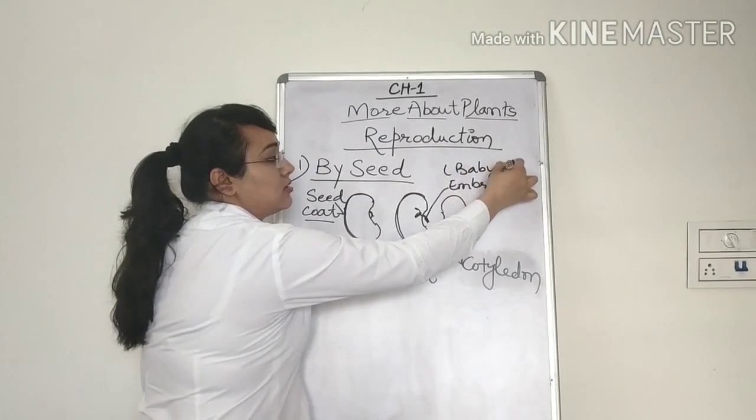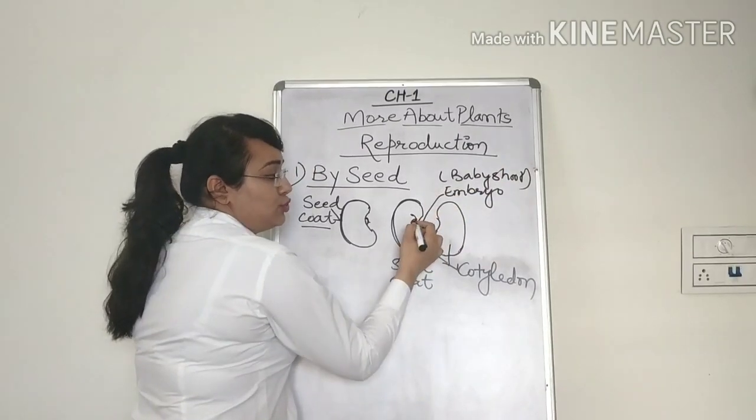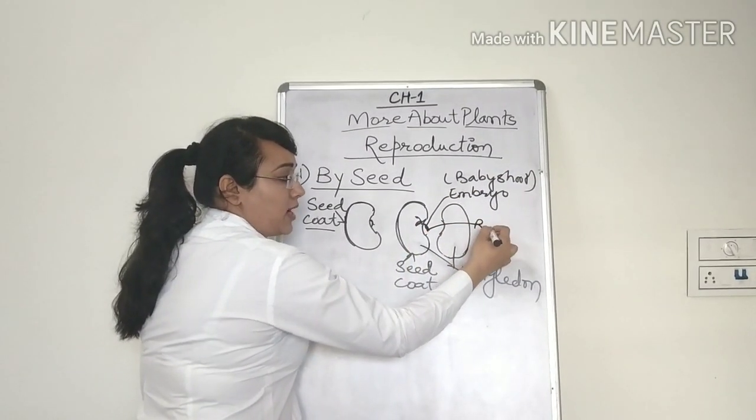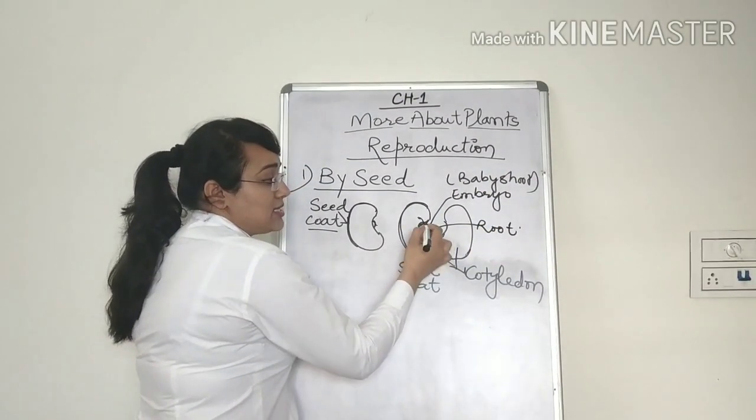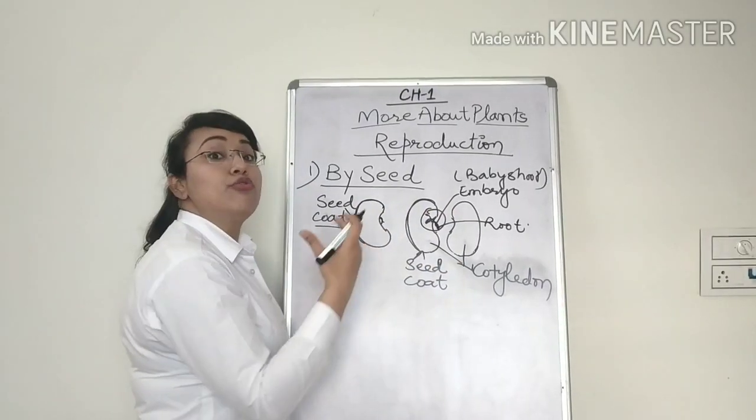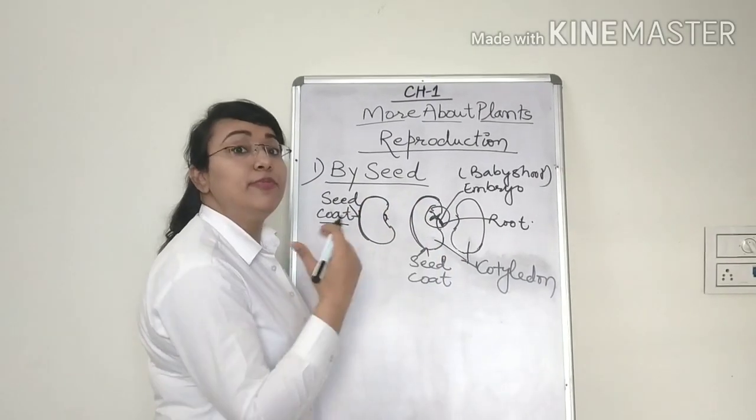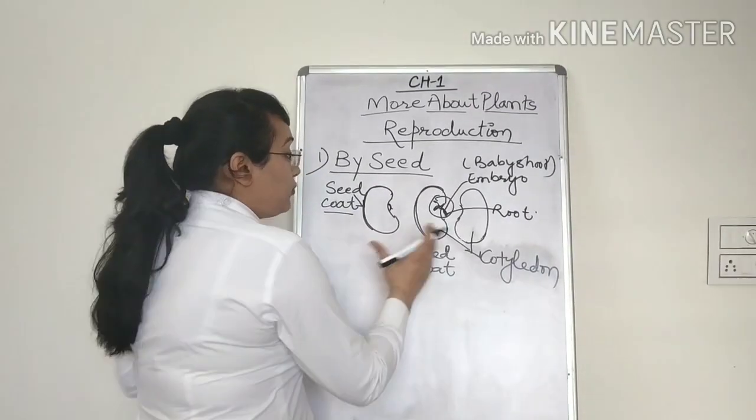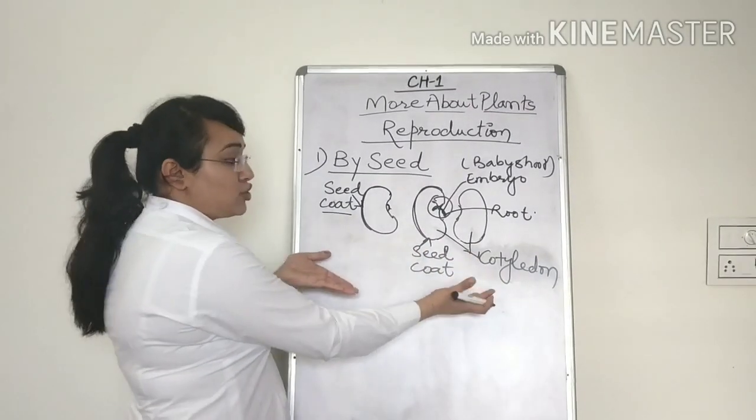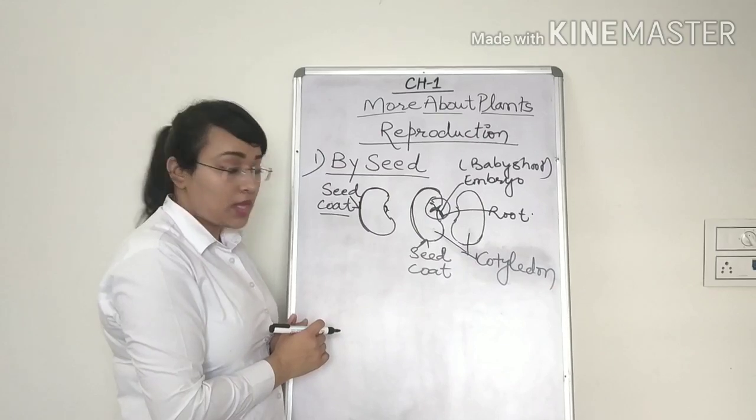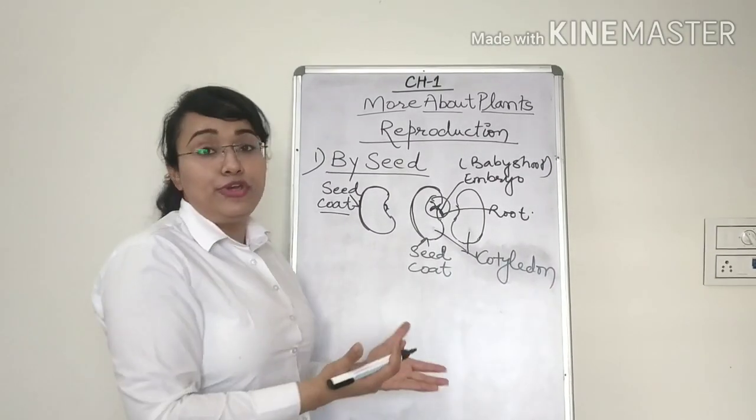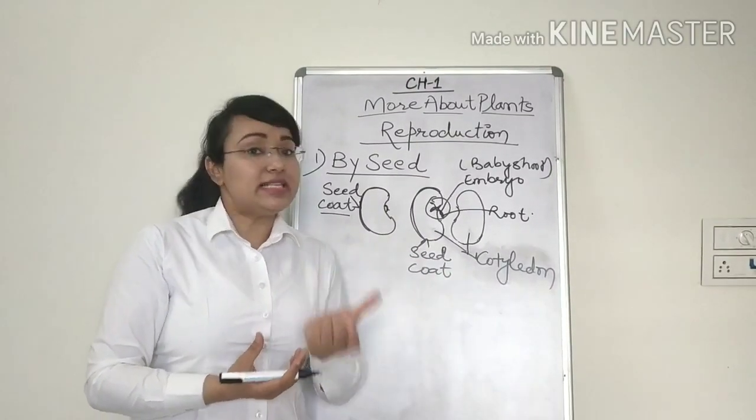Baby shoot part and the baby root part. Now this is from where the baby actually grows into a plant and reproduction happens. Now this is how the structure of the seed looks like. Now how do we reproduce using a seed?